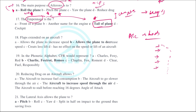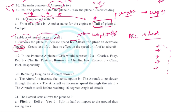Flaps are extended on an aircraft to decrease the speed of the aircraft while landing and to provide better stability. Flaps are located on the wings and are extended to allow the plane to decrease its speed.